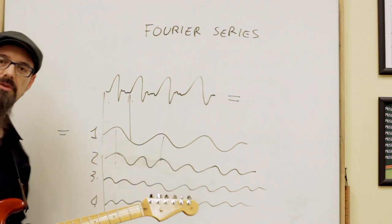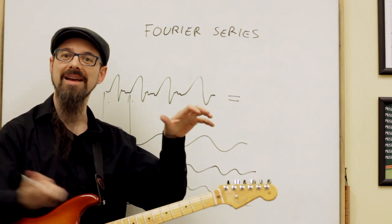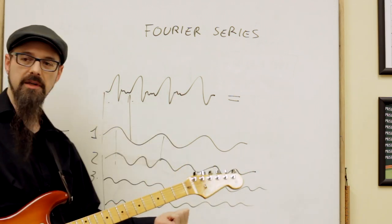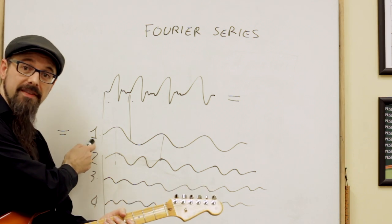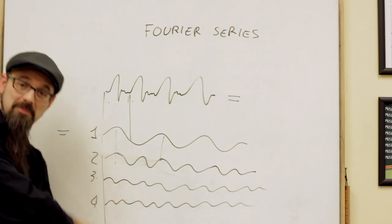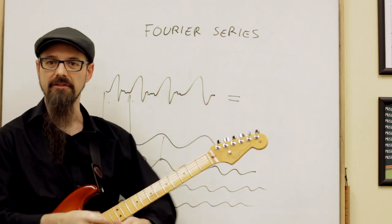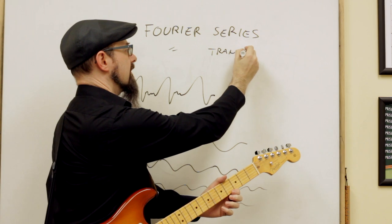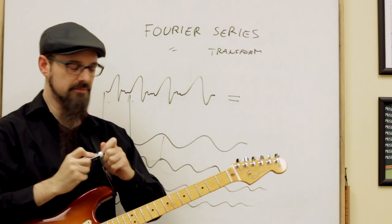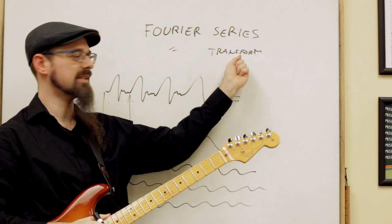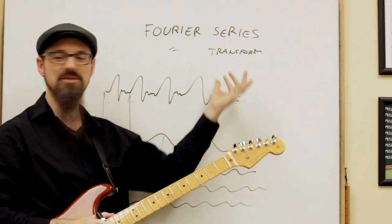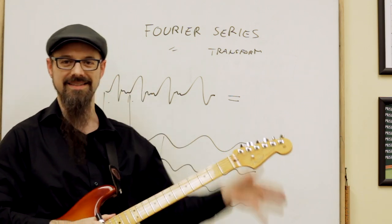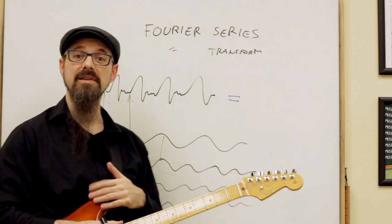Otherwise you cannot do that. If you take a bass drum or something that doesn't sound like a note, you cannot do the same thing because you don't have a fundamental frequency, so you cannot multiply it. You need to use something completely different called a Fourier transform. The Fourier series and Fourier transform are very similar names, but they're different procedures — very different. People hear the name Fourier and think it's the same thing. It's not.